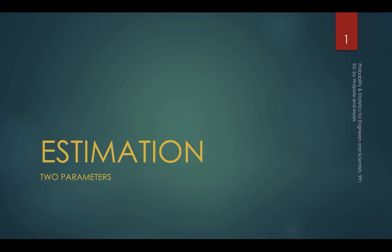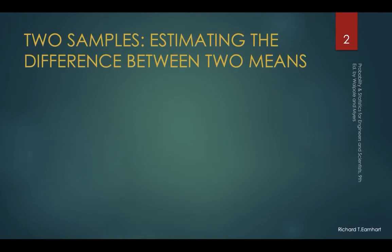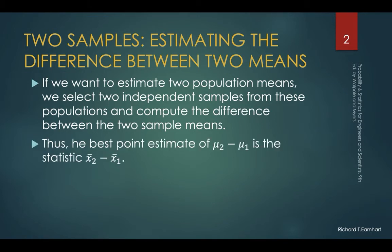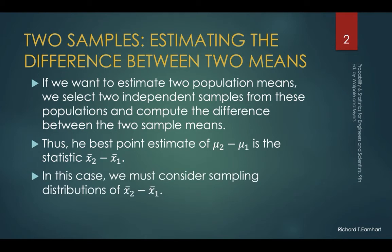We will now have estimation of two parameters. If we want to estimate two population means, we select two independent samples from these populations and compute the difference between the two sample means. Thus the best point estimate of the two population means mu sub 2 and mu sub 1 is the statistic which is the difference between the two sample means x sub 2 and x sub 1. We must consider the sampling distributions of x sub 2 and x sub 1.